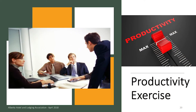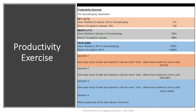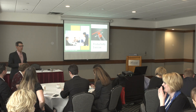So now we're going to do a productivity exercise. We have the same information for a day, a month, and a year, but we also have the number of units of production — how many rooms were sold on each of those days. To calculate the productivity, we divide hours worked by units of production. That's it. That's how you calculate productivity.